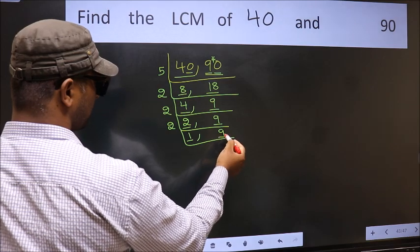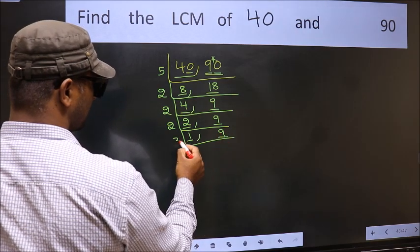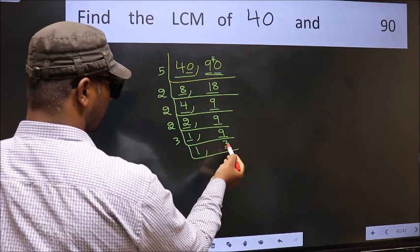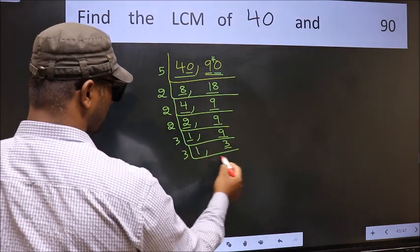So focus on the other number 9. 9 is 3 times 3 is 9. Now we have 3. 3 is a prime number, so 3 times 1 is 3.